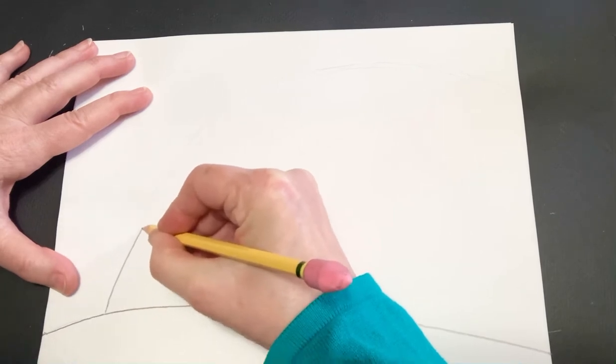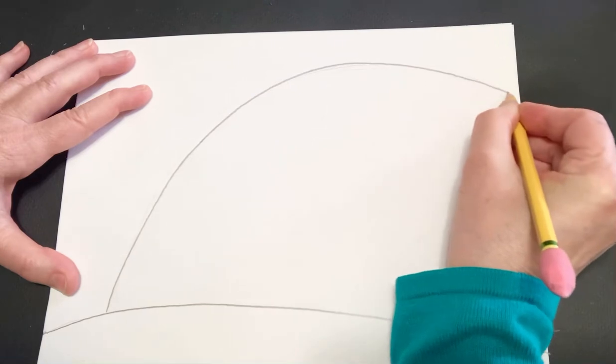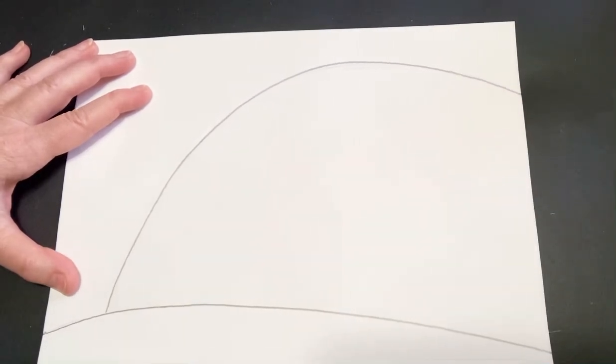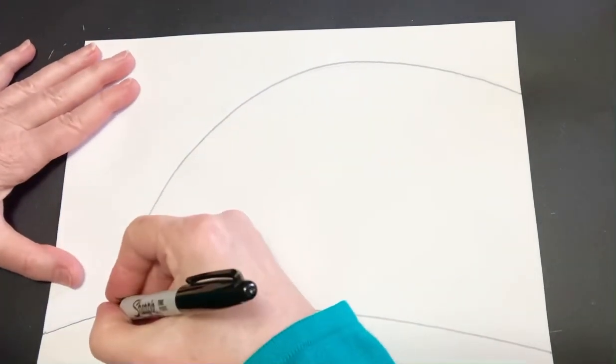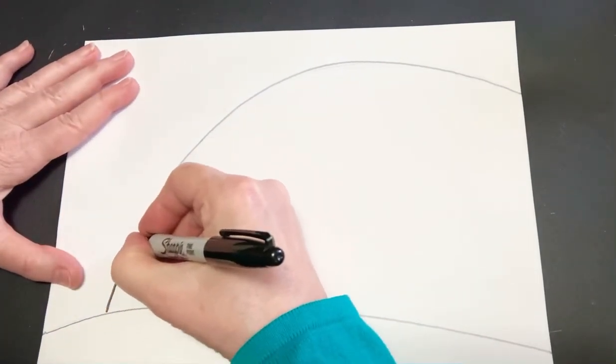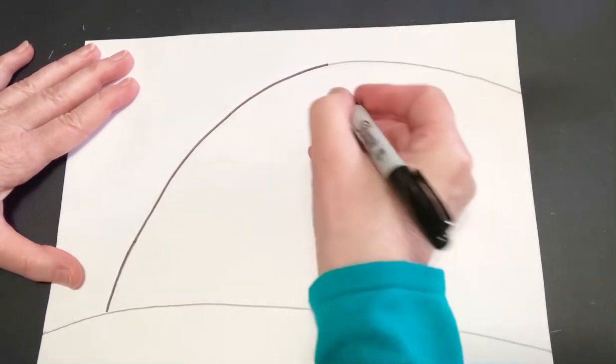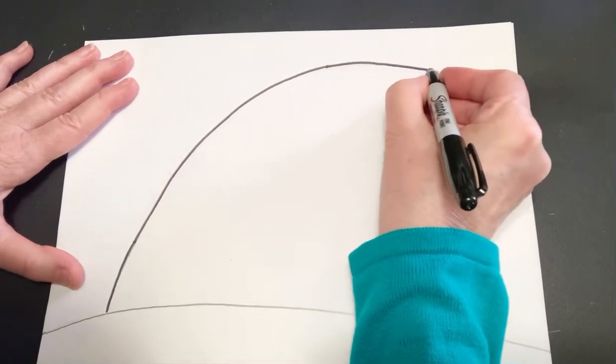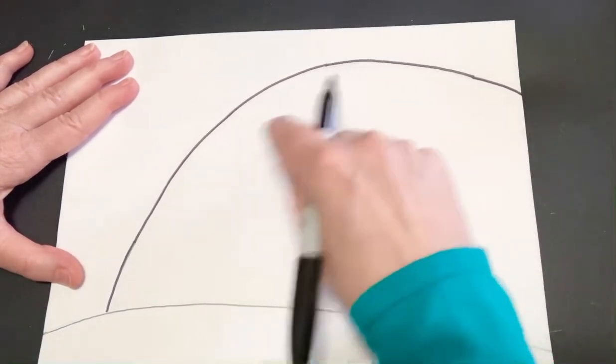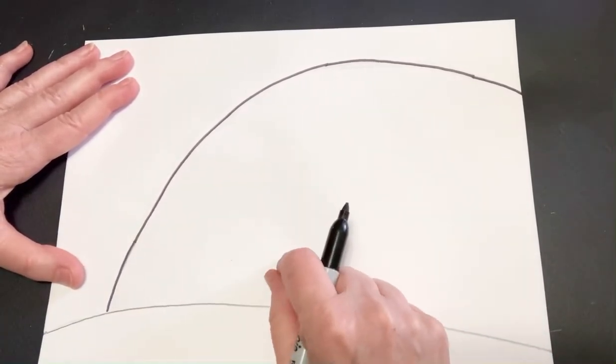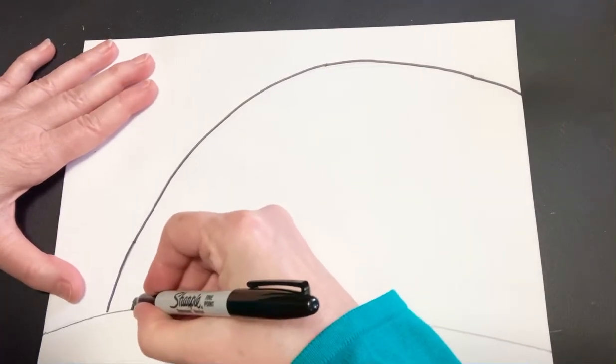We're going to start with the very top one. Does anybody know what the top color always is no matter what? It is red. I'm going to switch over now to my Sharpie but you can keep going in pencil. The hardest thing about this project is going to be to try to make even colors. Just do the best you can. It doesn't have to be perfect.